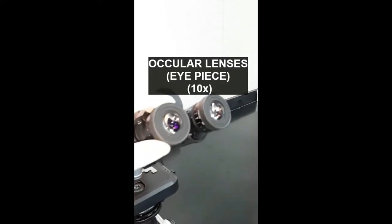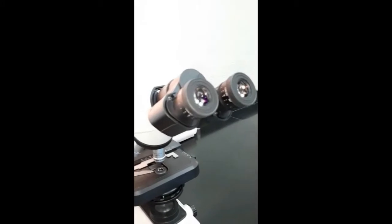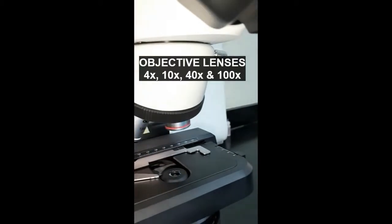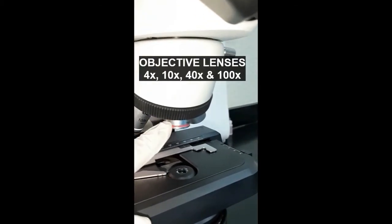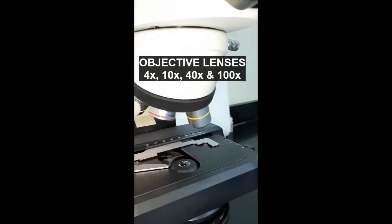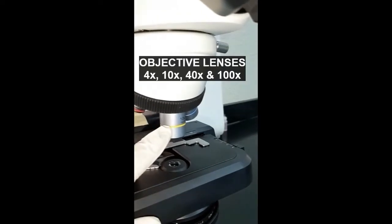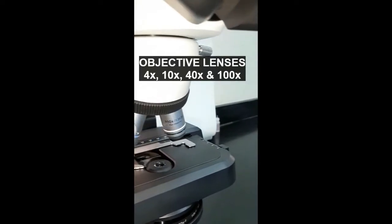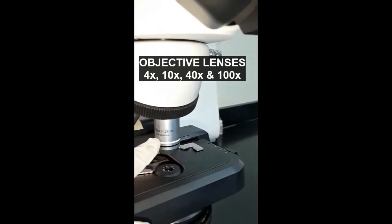The next part is the objective lenses. This is the second point of magnification. Objective lenses are connected with the revolving nosepiece, and it has four different color-coded objective lenses: 4x in red, 10x in yellow, 40x in blue, and 100x in white and black.